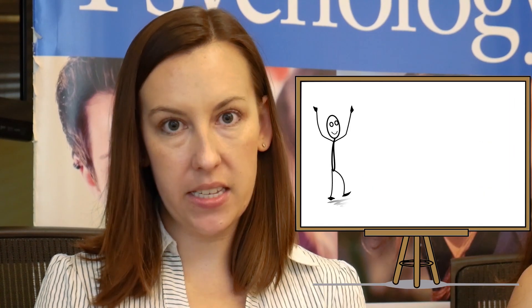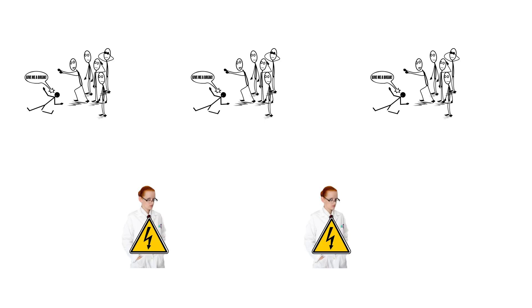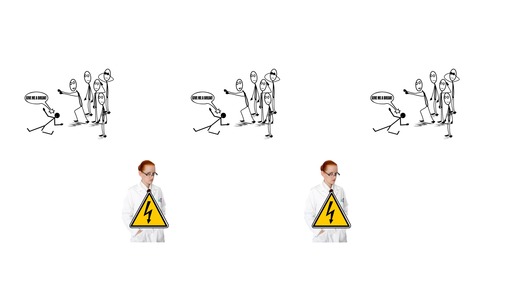For example, the bystander effect is when someone needs help, but if a lot of people are around, most people won't help — they conform to what everyone else is doing and figure someone else will take care of it. In Milgram's study, most people will follow an instruction if an authority figure tells them to, even if it means hurting another person. This is very similar to conformity: in one case people conform to the perceived norm, in another they conform to what an authority figure wants. If you had just studied the bystander effect in one session and the Milgram experiment in another, you may not have made the connection between the two.